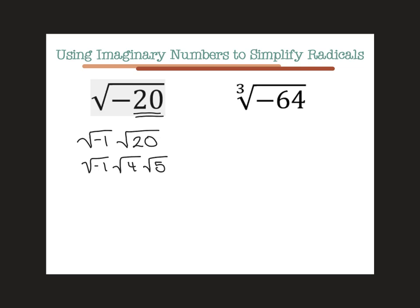The square root of negative 1 equals i. The square root of 4 is 2. And the square root of 5 cannot be simplified, so we leave it in the radical.